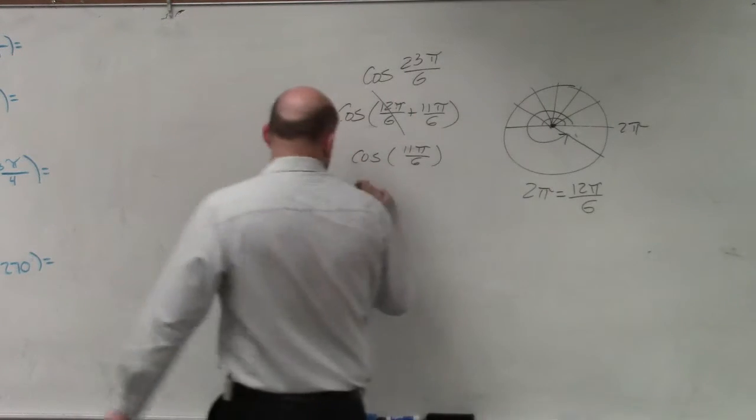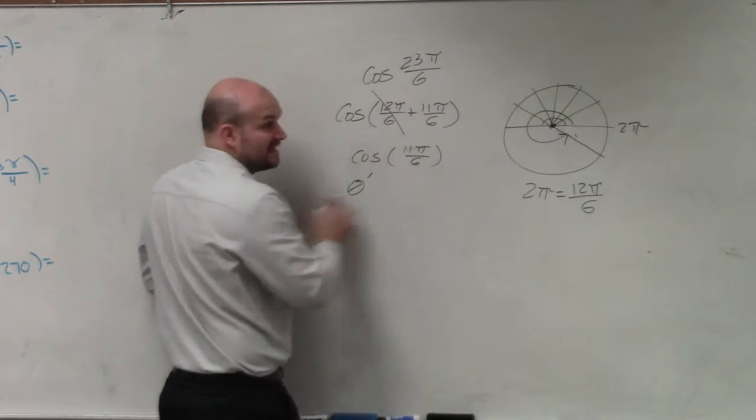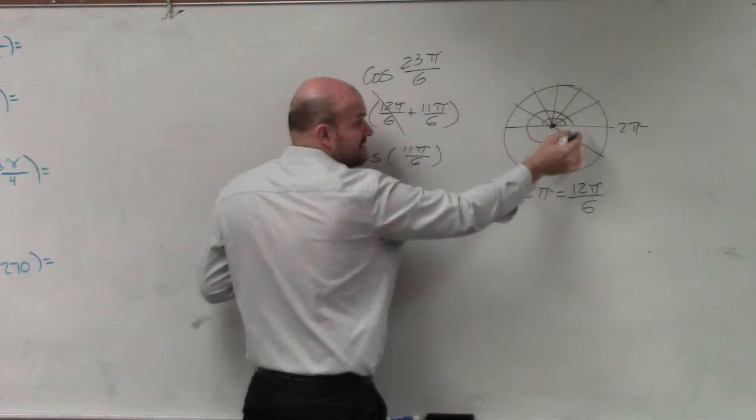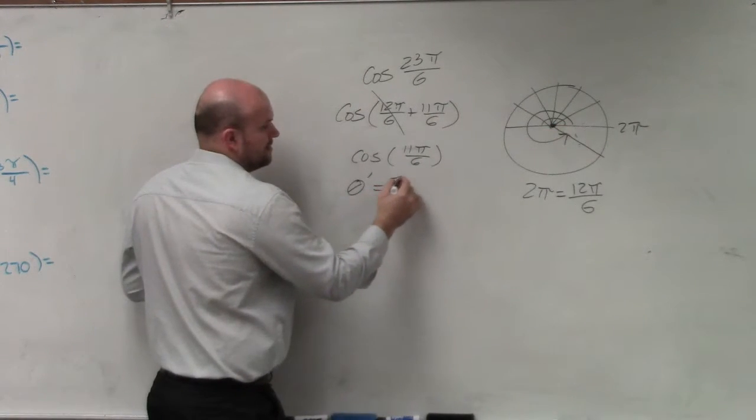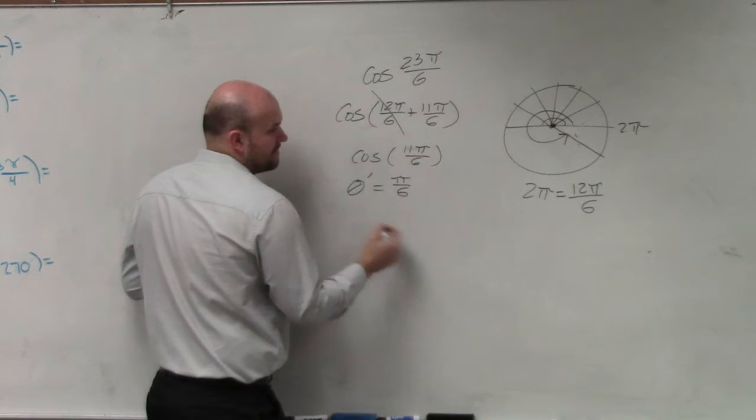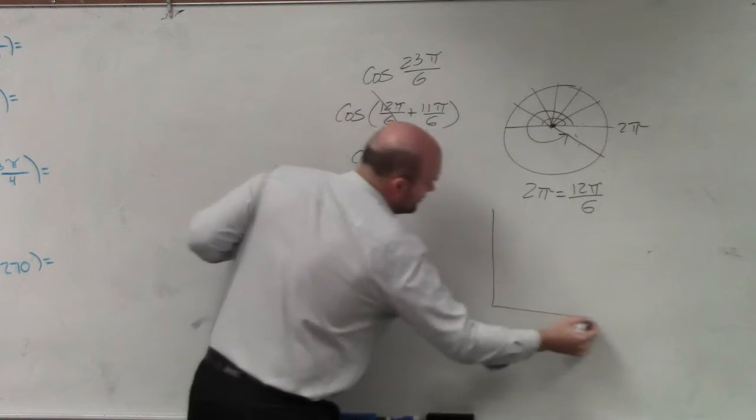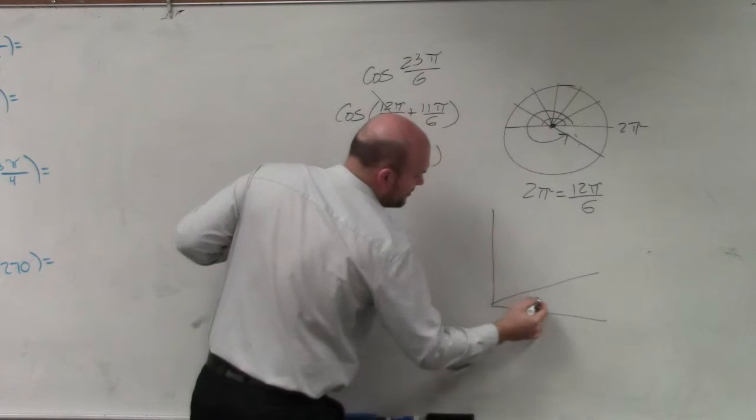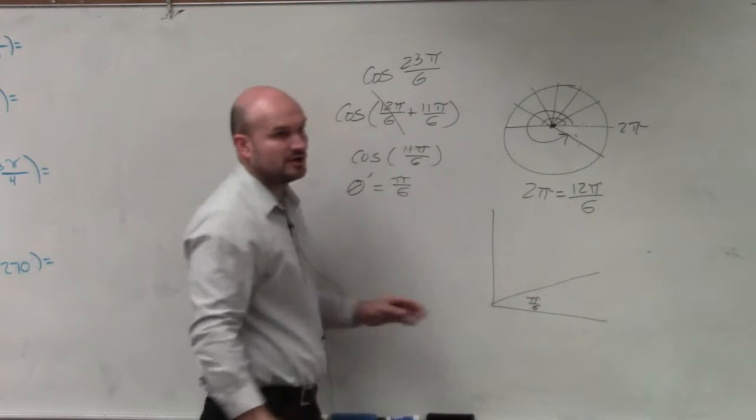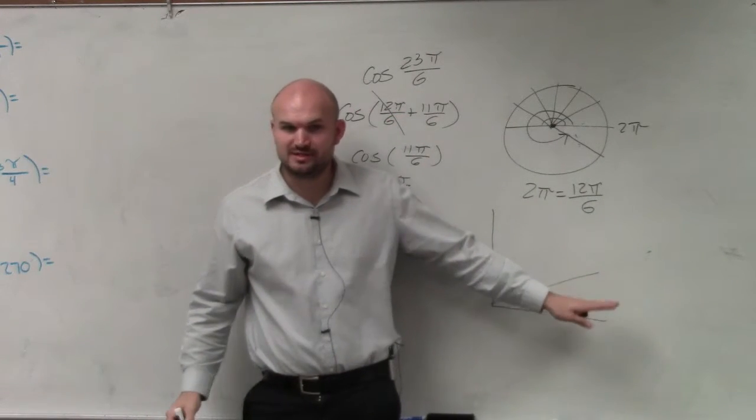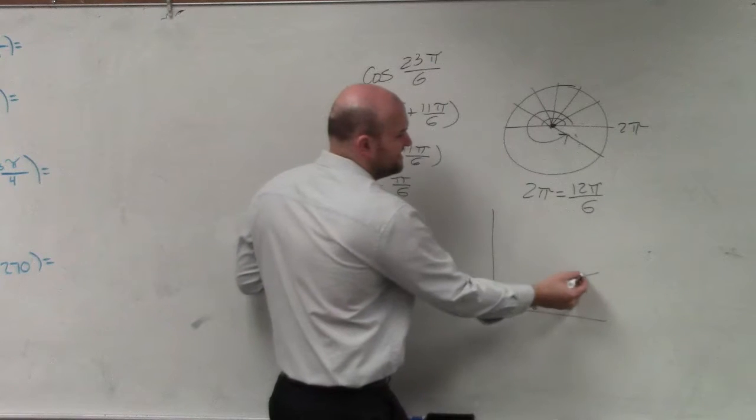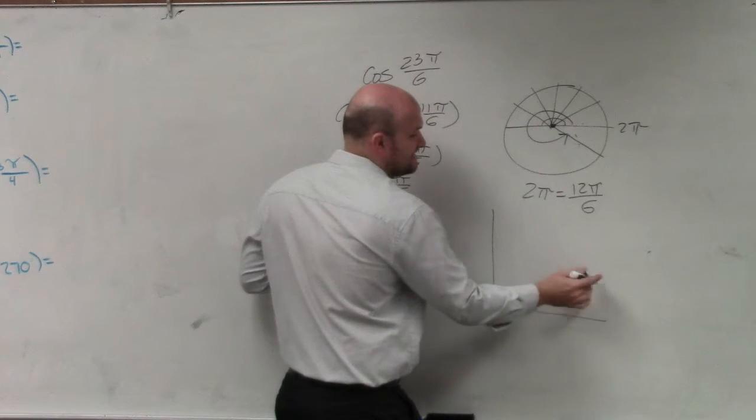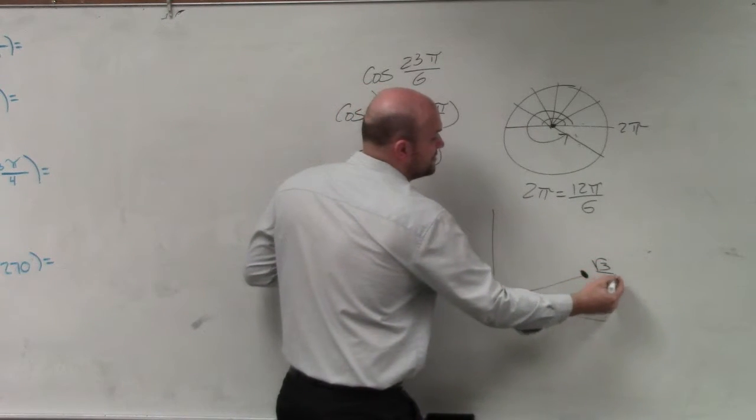And we could say that theta prime, the reference angle, how far is it from the terminal side to there, is just going to be π over 6. So I look at my unit circle, and I say, what is that coordinate point for π over 6? Because before our quiz, we need to know what that coordinate point is. That coordinate point at π over 6 is going to be square root of 3 over 2 comma 1 half.